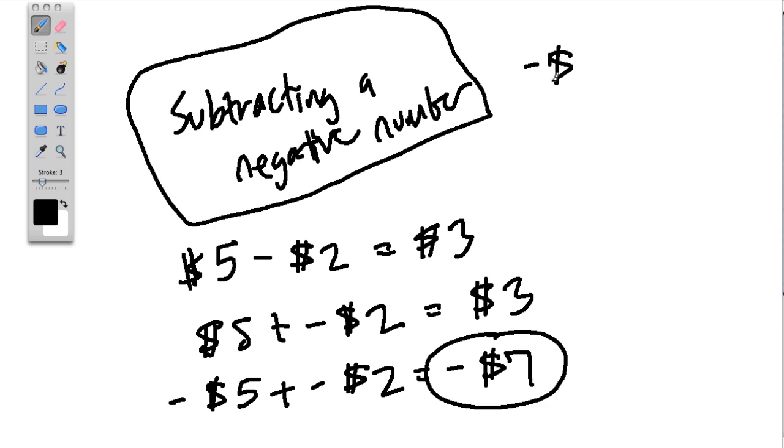Let's say you owe me $5. To subtract a negative quantity from that, let's say we subtracted minus $2. What you would get is negative $3.